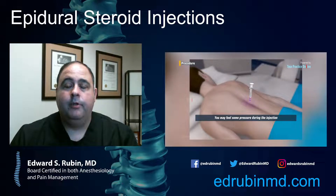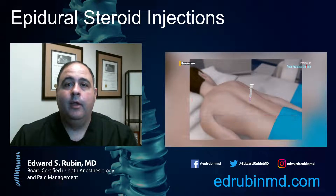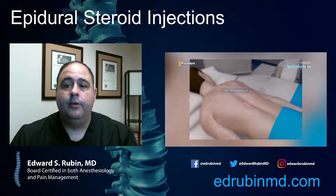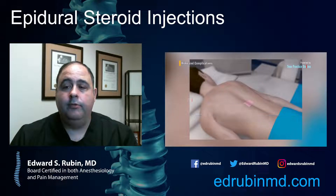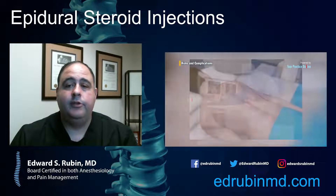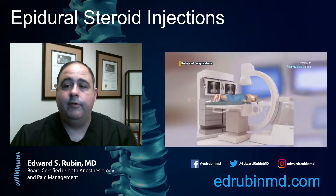That makes it a very accurate, very pinpointed procedure. The whole process takes about two to three minutes for most patients under x-ray. Afterwards, you put a band-aid on the back and you're good to go. It's a quick, easy way to target a degenerative disc.